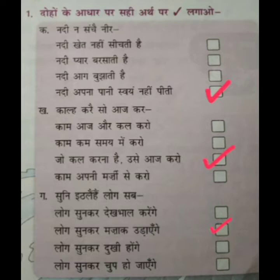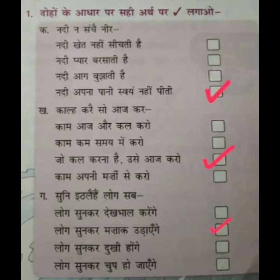The next line is Kaal kare so aaj kar — it means jo kal karna hai, usse aaj hi kar lo. The third option is correct: Jo kal karna hai, usse aaj kar lo — put a tick on the third option.